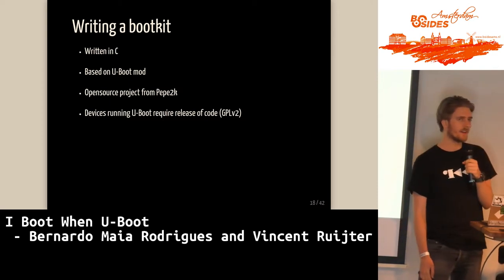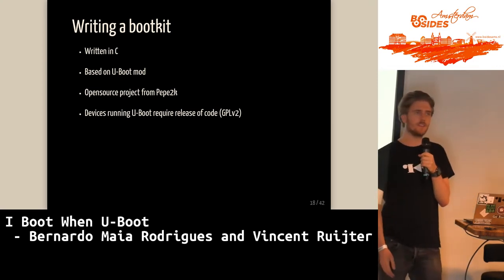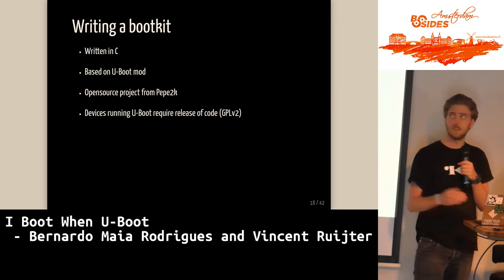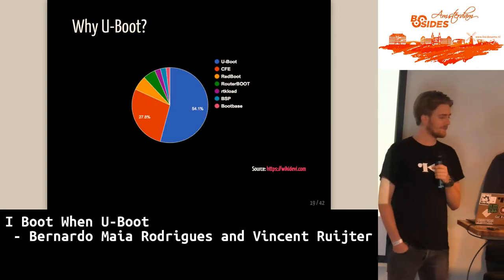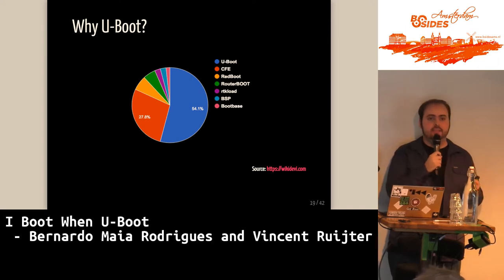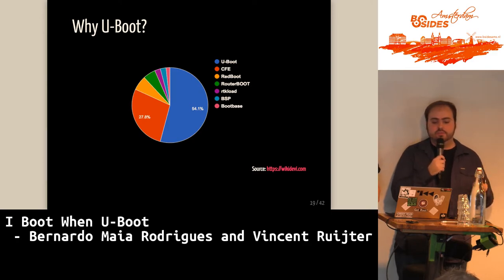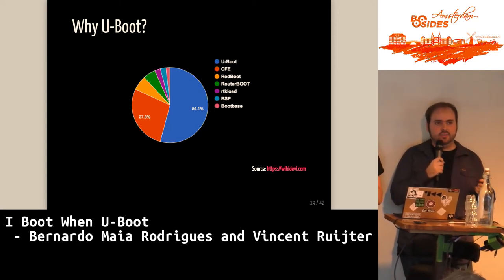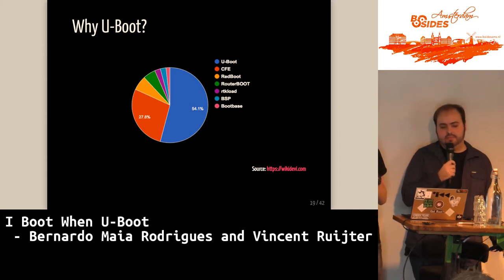U-Boot is an open source bootloader — GPL v2 license — which means any vendor using U-Boot has to provide you with the source code. That makes writing a bootkit like this much easier than writing a custom bootkit. We used uBootMod, an open source project from Pepe2000. According to WikiDevi — a website describing lots of information about routers and embedded devices — U-Boot is the most-used bootloader. The second most used is CFE, Common Firmware Environment, which is proprietary from Broadcom and not as easy to modify, so that's why we chose U-Boot.